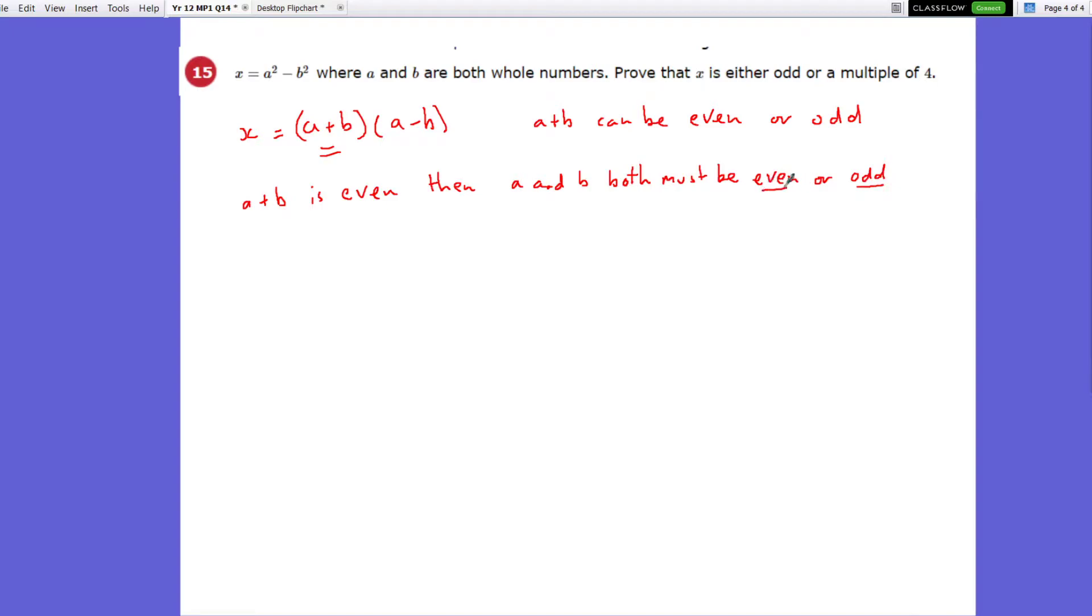So when you add two even numbers, it makes an even. Or odd add odd is also even. Now, for similar reasons, if you do an even subtract an even, you'll end up with an even.